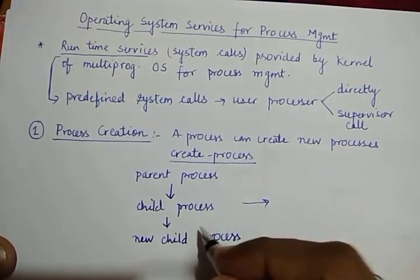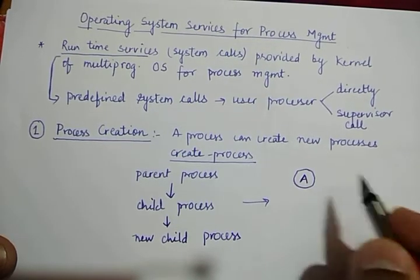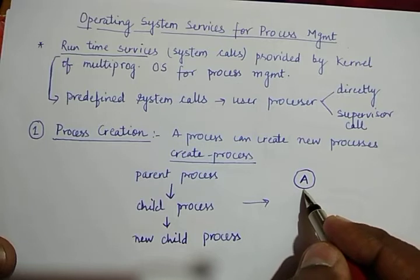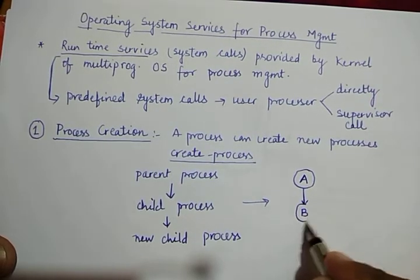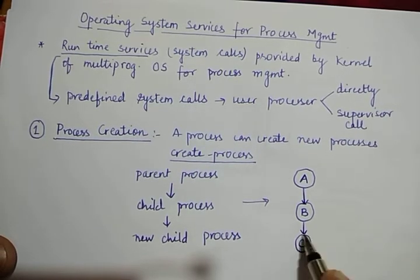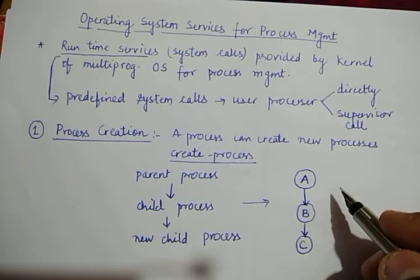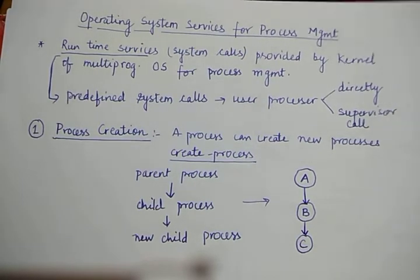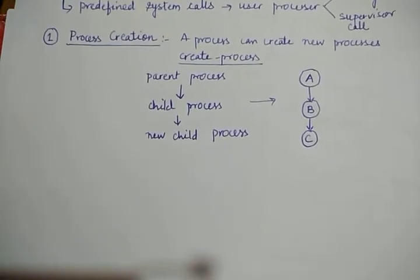This creates a hierarchy. For example, suppose A is a parent process and it creates a new child process B, and B in turn creates its child process C. This will create a hierarchy in our operating system.